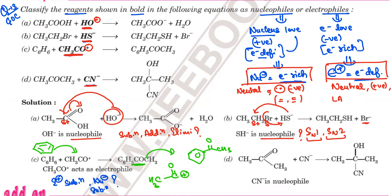Moving deeper into the problem, we already have a ketone. CN⁻ carries a negative charge, so it will attack the partial positive carbon of the carbonyl group. The carbonyl carbon is partially positive and oxygen is partially negative. CN⁻, being an electron-rich species, attacks the electrophilic carbonyl carbon. So CN⁻ is a nucleophile, and the carbonyl carbon of the ketone was the electrophile.